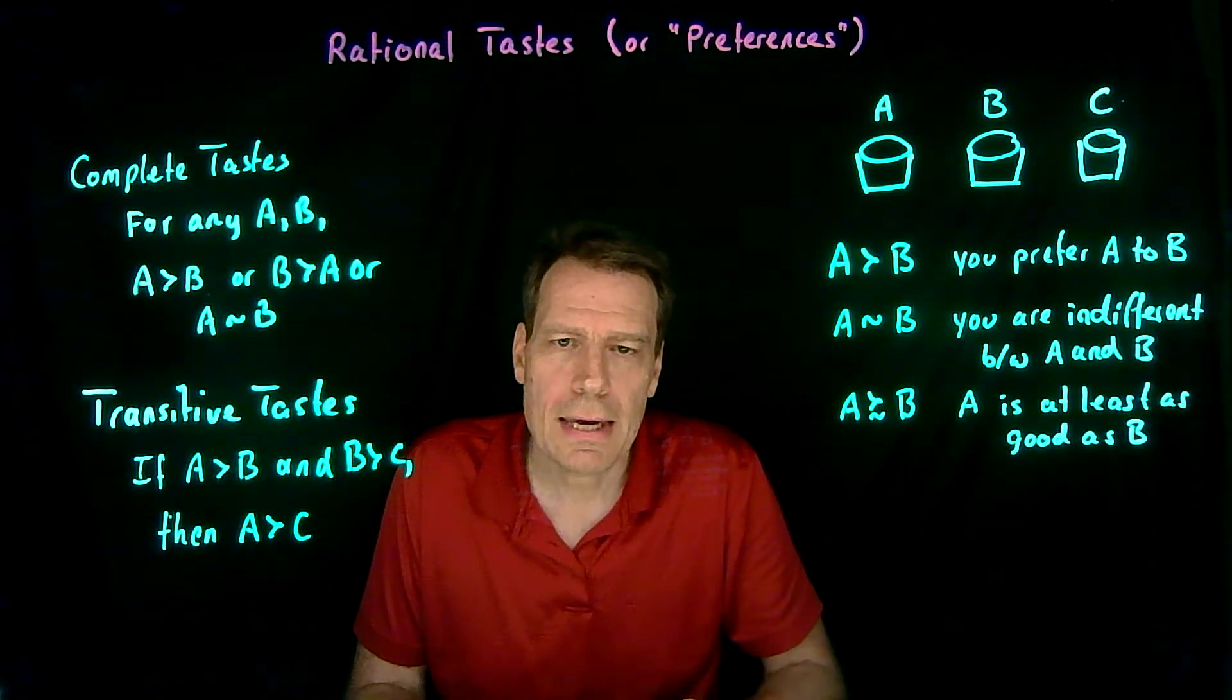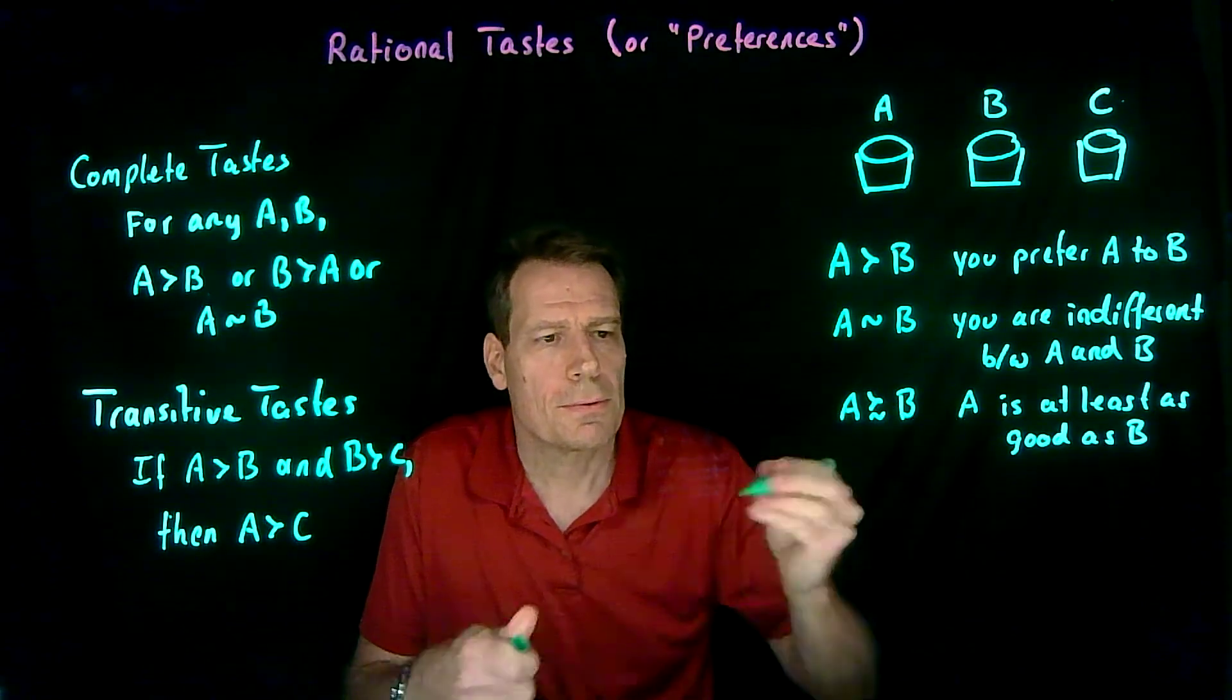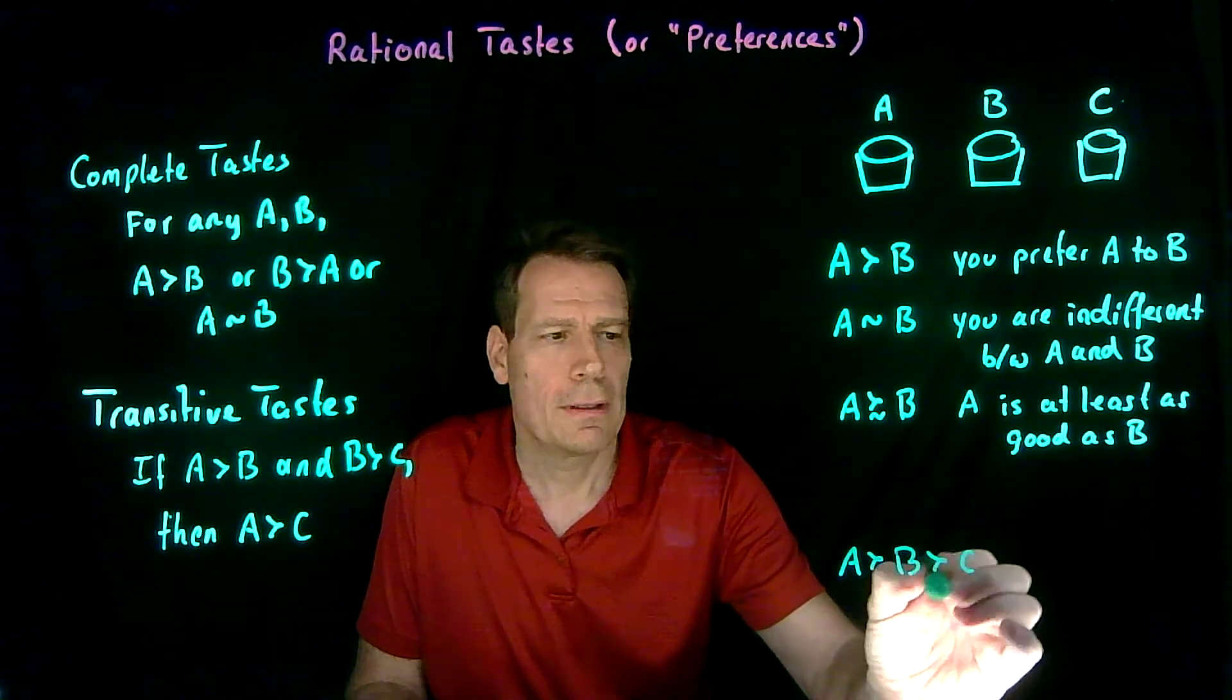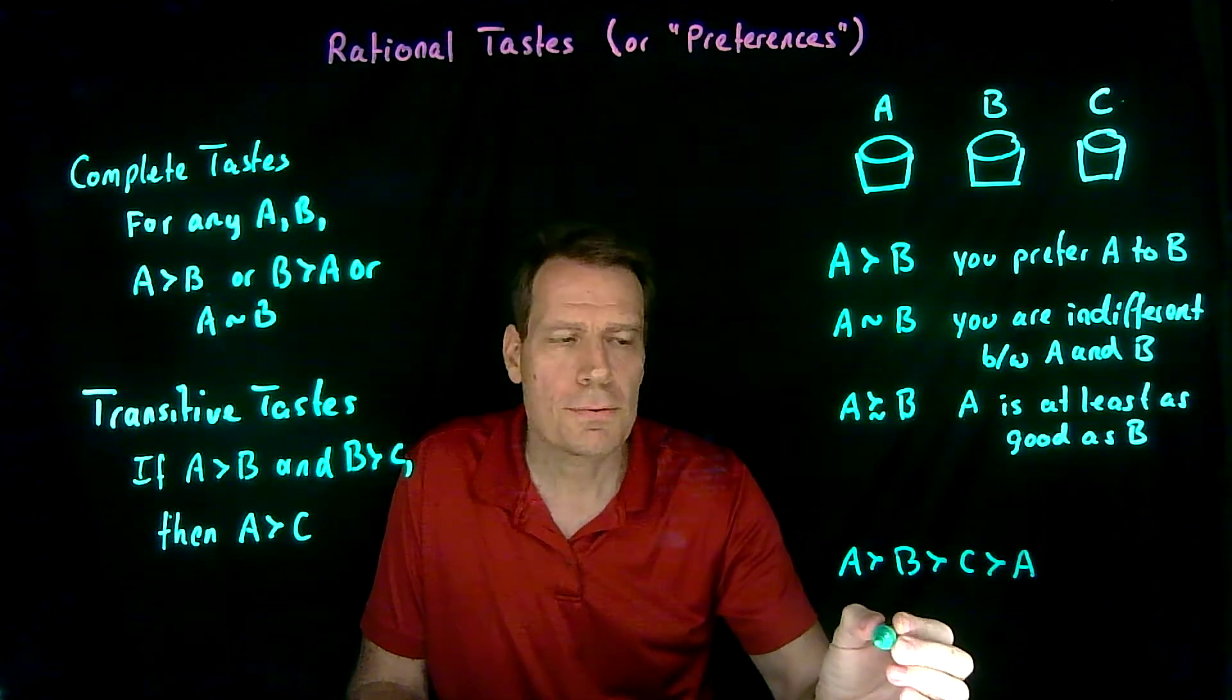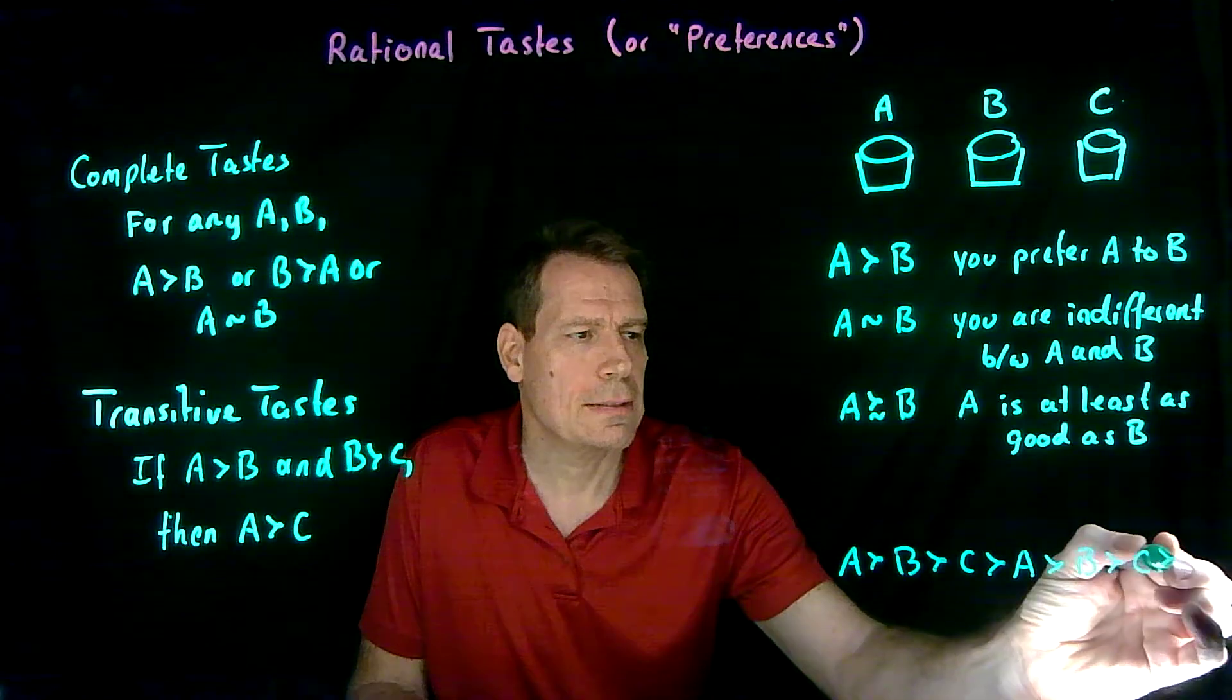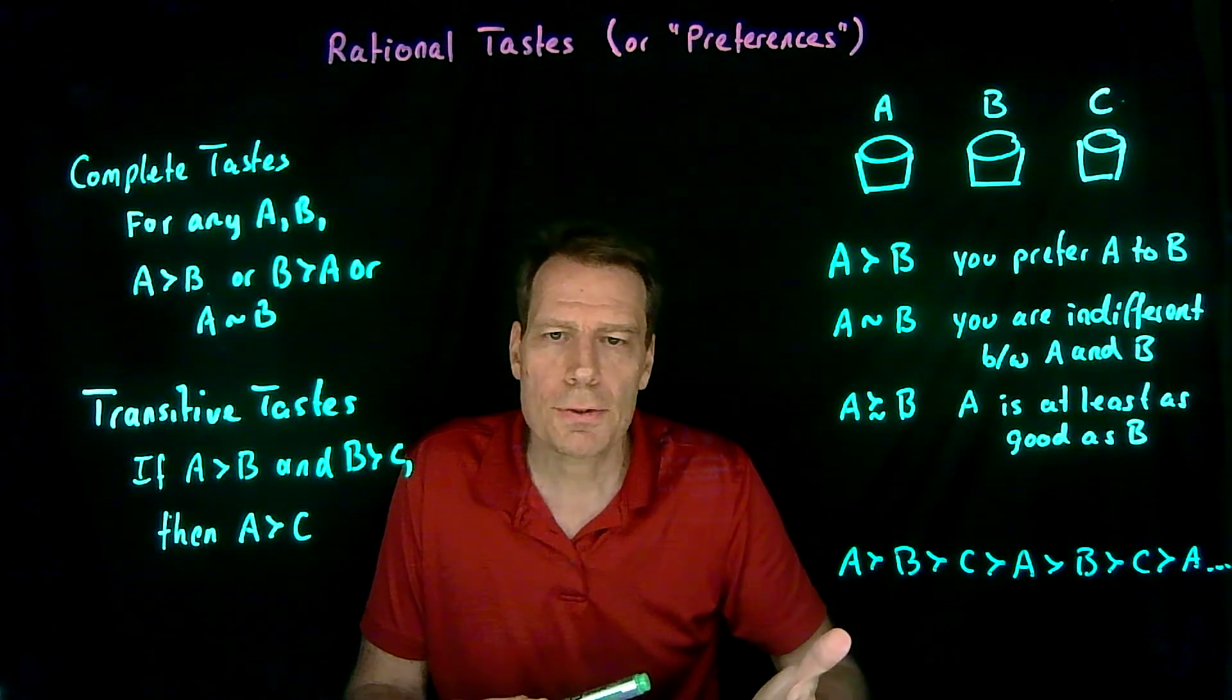Suppose that wasn't the case. Suppose it was the case that you preferred A to B and B to C and C to A. So if you prefer C to A, well now we're running into trouble because we also know you prefer A to B and B to C, but you prefer C to A and so on and so forth. So if this was the case, you would have trouble making a choice.